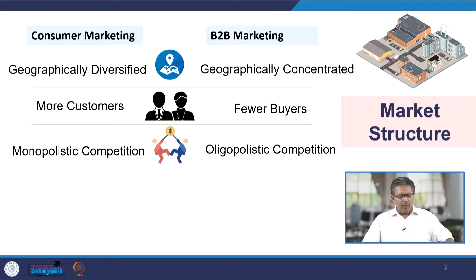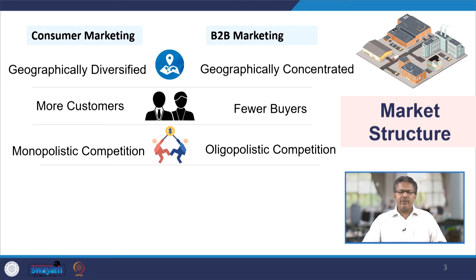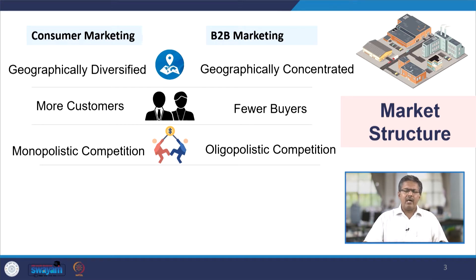The kind of competition in the consumer market is monopolistic competition, where there are lots of producers and sellers. On the other hand, in the B2B space you find very few players. There are not too many players because entry barriers are very high, and even exit barriers are very high.